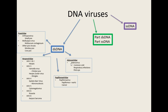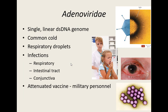Our last group of double-stranded DNA viruses is the Adenoviridae group — more commonly known as adenoviruses. They have single, linear, double-stranded DNA. Most viruses in this group cause the common cold, though they're not the only viruses that do — RNA viruses also cause the common cold. Adenoviruses are spread by respiratory droplets and usually cause respiratory infections: cough, sneezing, runny nose, basic cold-type symptoms. They can also affect the intestinal tract and cause diarrhea, and they can get into the eye and cause pinkeye (conjunctivitis).